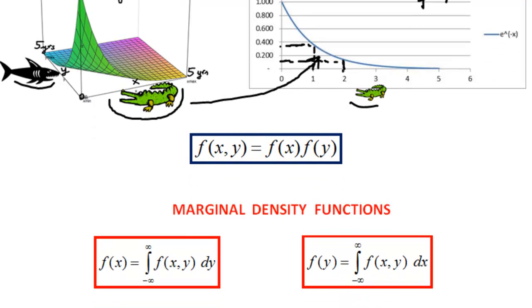But now, to prove independence, we need to prove that the joint PDF here can be represented as a product of two marginal density functions. And how do we find these marginal density functions mathematically?